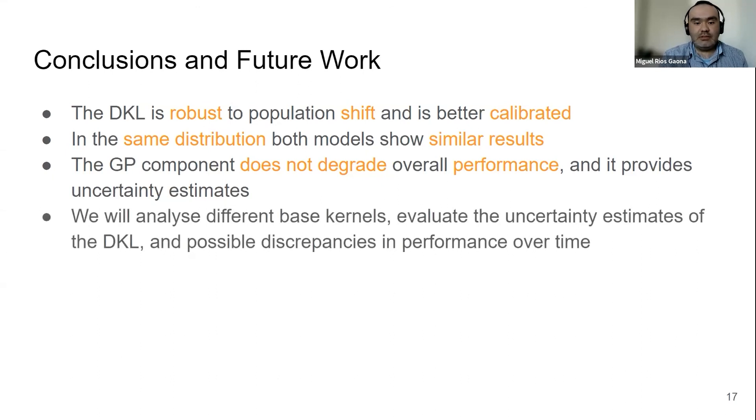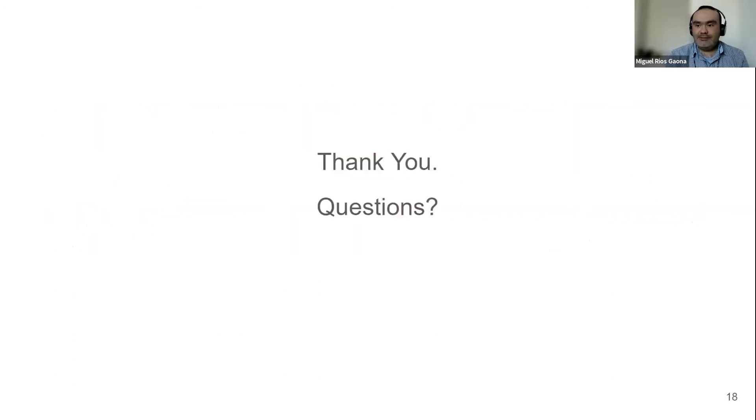For future work, we will analyze different types of kernels in the GP. We are going to evaluate our uncertainty estimates and check out possible discrepancies over time, because so far we just did it like coarse grain, like CareVue and MetaVision. But what happens when we go into the population? So yeah, thank you.